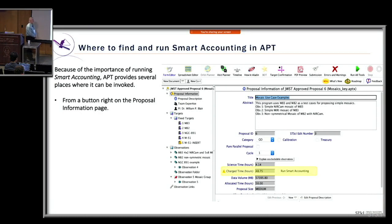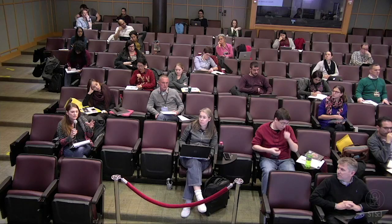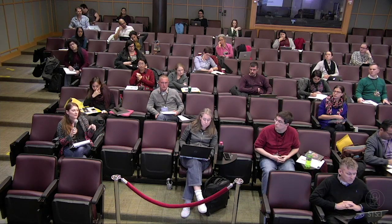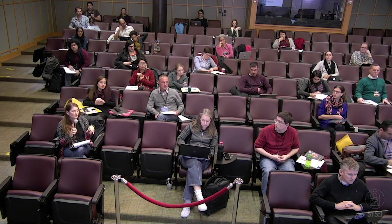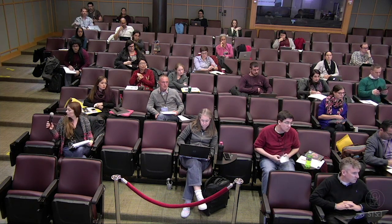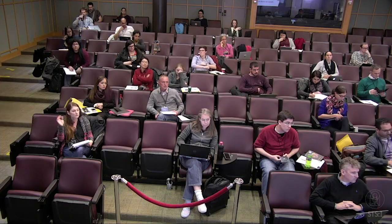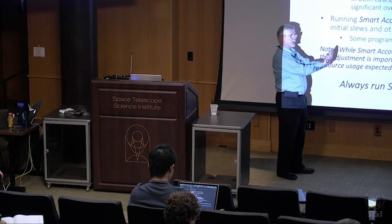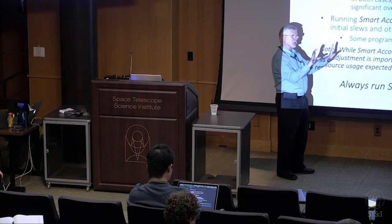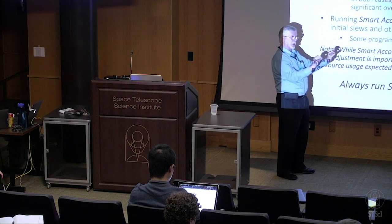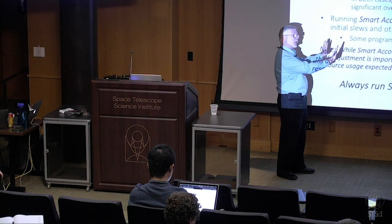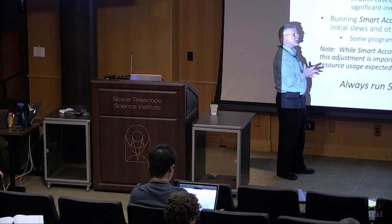Question: if smart accounting removes something you actually need, is there a way to prevent it? Answer: yes — if special requirements are in place (for example, if relative orientations between MIRI and NIRCam observations matter and you need them done at different times), smart accounting will not remove the extra slew in that case.